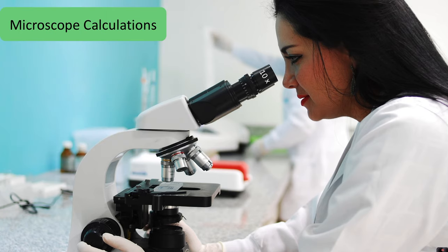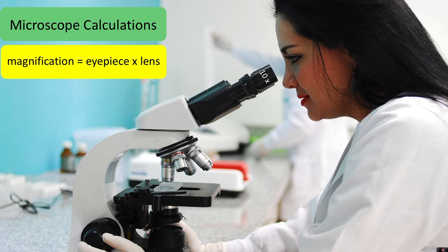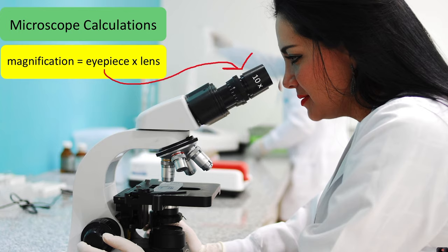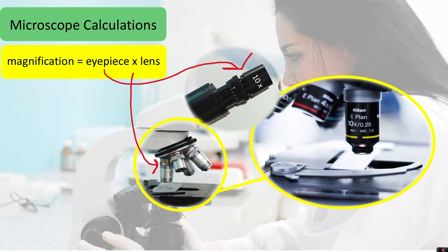In order to work out how many times magnified your image is you will need to do a simple microscope calculation and that is magnification equals the eyepiece times the lens. If you look at the eyepiece that will have a number on it which is often but not always 10 and then each of the lenses will also have a number on them.